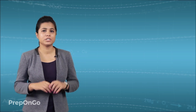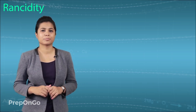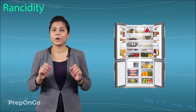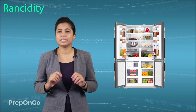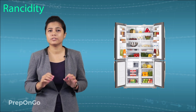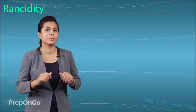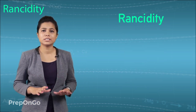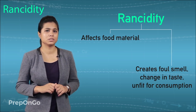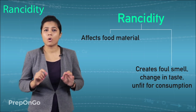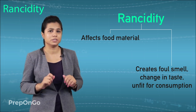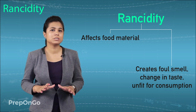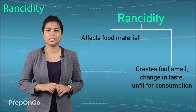Now let's discuss the second effect of oxidation, which is rancidity. Have you ever wondered why you keep your cooked food in the fridge? The answer is you keep your food in the fridge so as to prevent the food from rancidity. Rancidity is a process which affects food material. The fats and oils get oxidized and hence the food material gets rancid, creating a foul smell and also a change in taste.